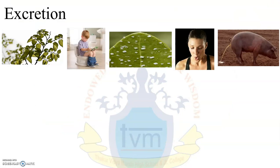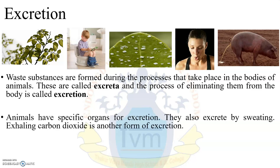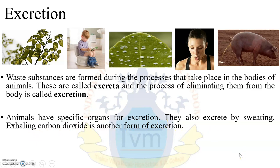The next characteristic is excretion. Observe these pictures carefully — they show the characteristic of excretion in different living things. Waste substances formed during processes that take place in the bodies of animals are called excreta, and the process of eliminating them from the body is called excretion. Animals have specific organs for excretion; they also excrete by sweating, and exhaling carbon dioxide is another form of excretion. Plants do excrete too — some plants shed their leaves, and waste substances stored in the leaves are shed along with them.